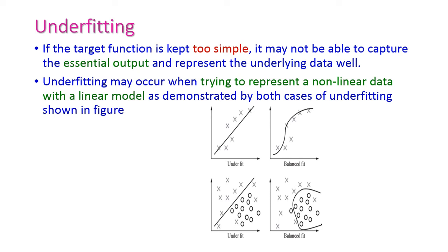Underfitting means if the target function is very simple, then underfitting may occur — that means it may not be capable enough to capture the essential output. Underfitting occurs when trying to represent non-linear data with a linear model. The data is actually non-linear, but the model is a very simple linear model.